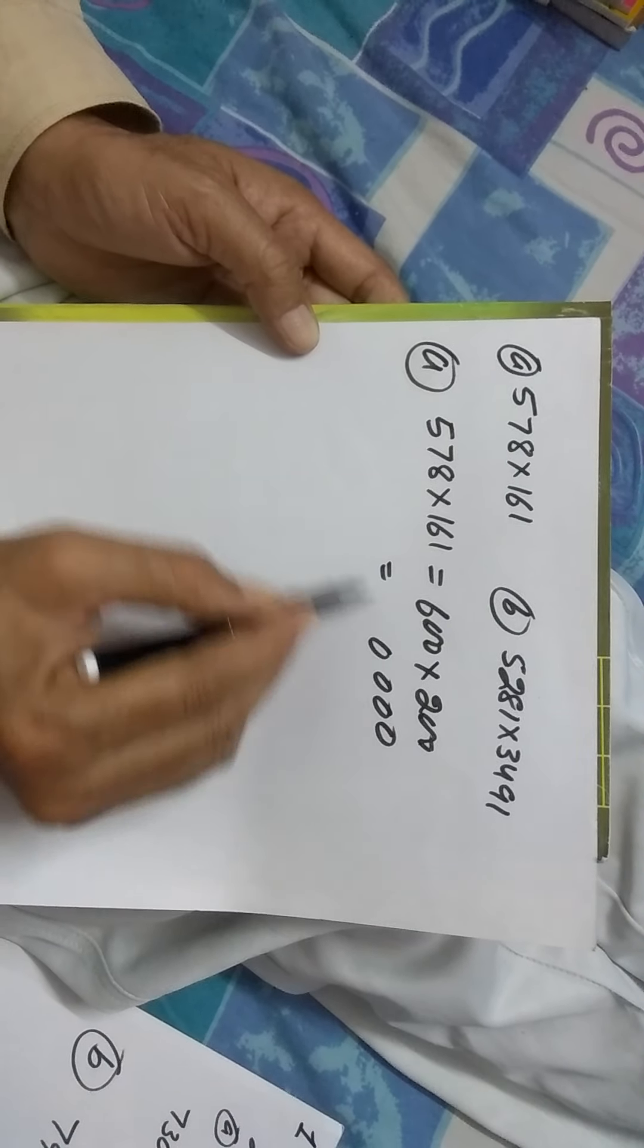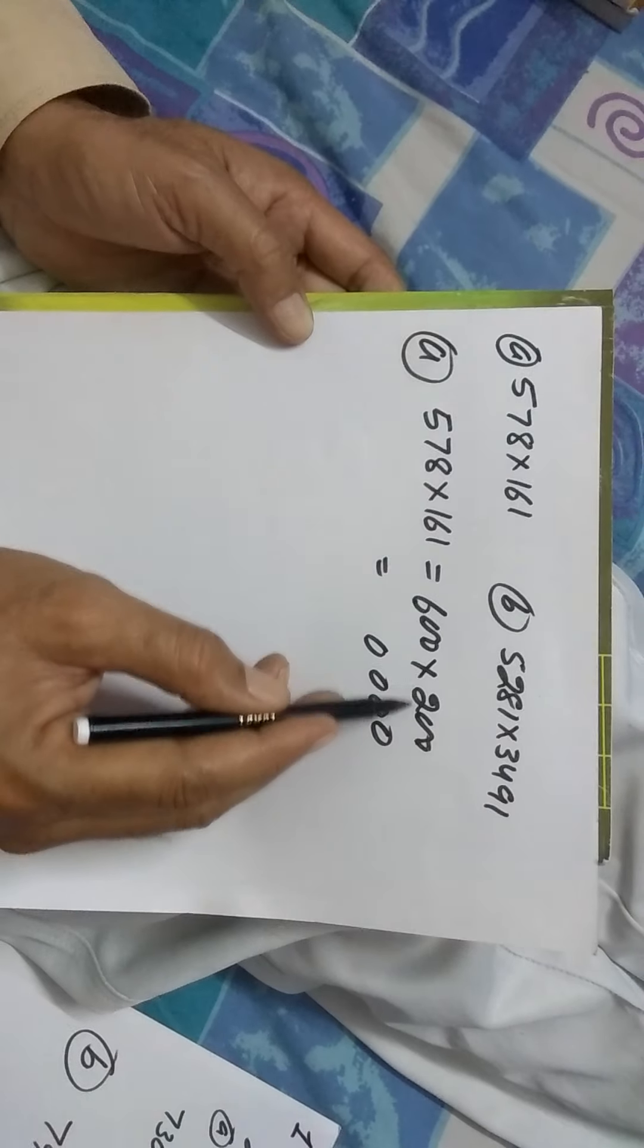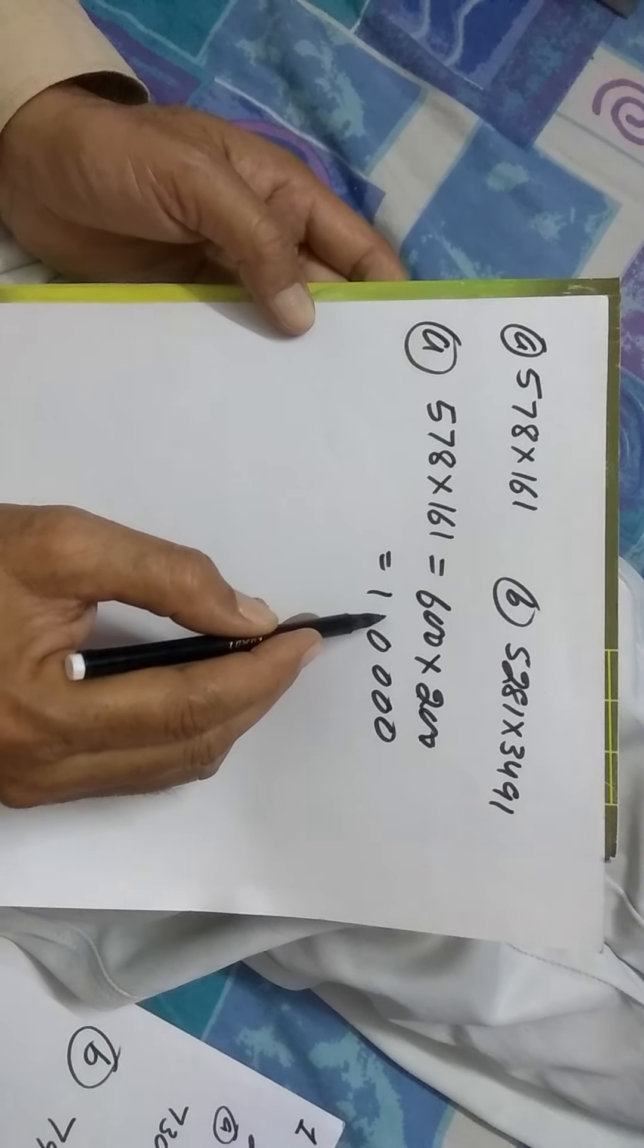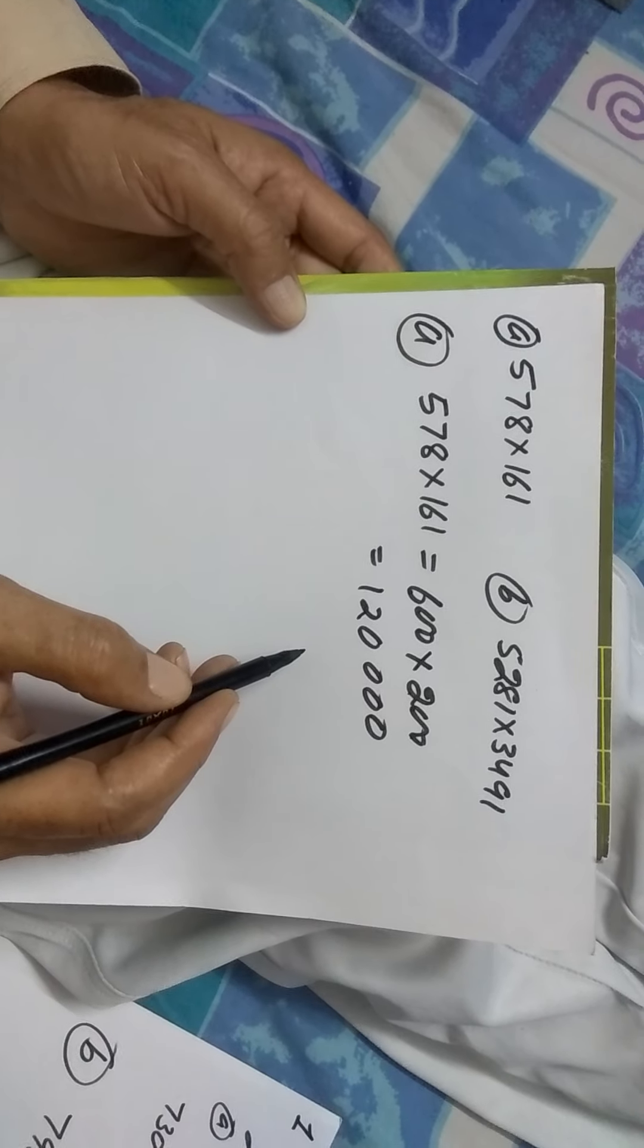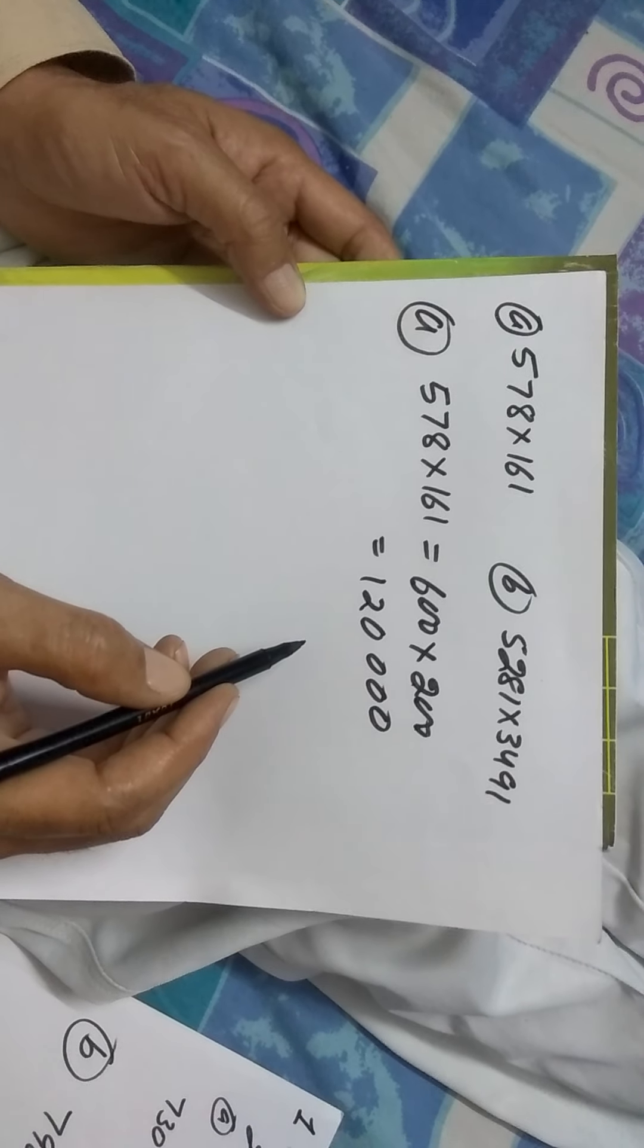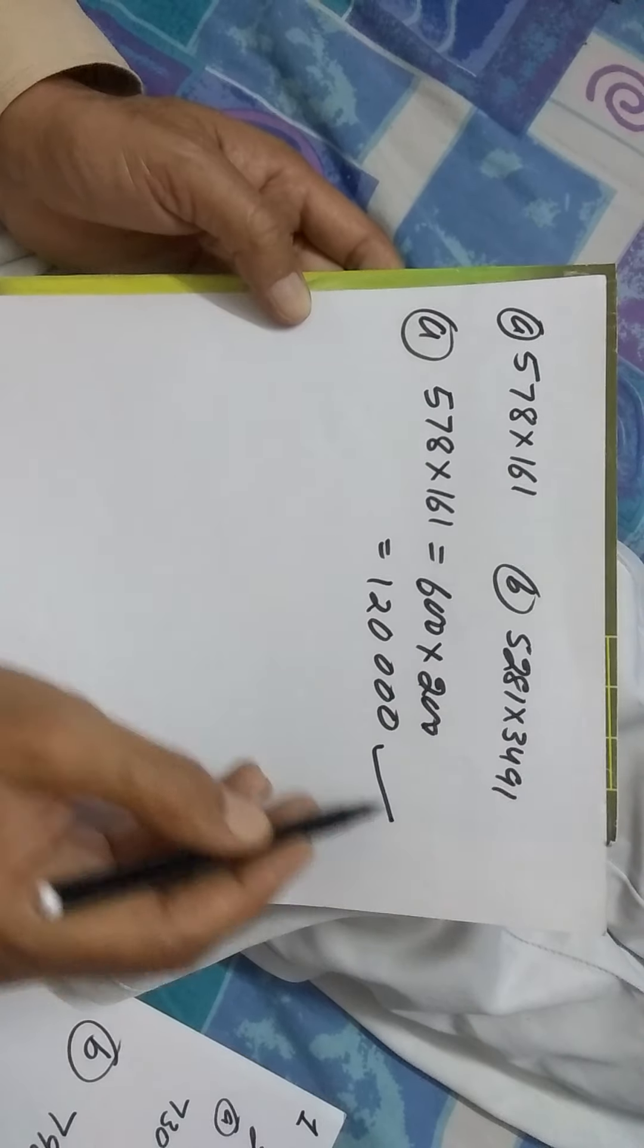These are the four zeros. And 6, 2, 12. So, the number comes out to be 1,20,000.